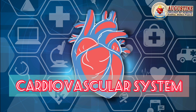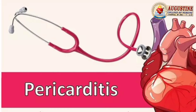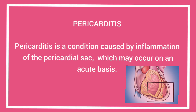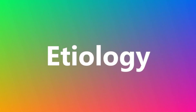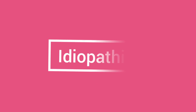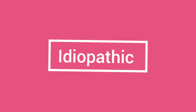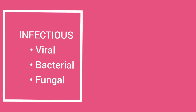Welcome back to the web series of cardiovascular system. Pericarditis is a condition caused by inflammation of the pericardial sac, which may occur on an acute basis. Etiology includes idiopathy and infectious causes such as viral infection, bacterial infection, and fungal infection.